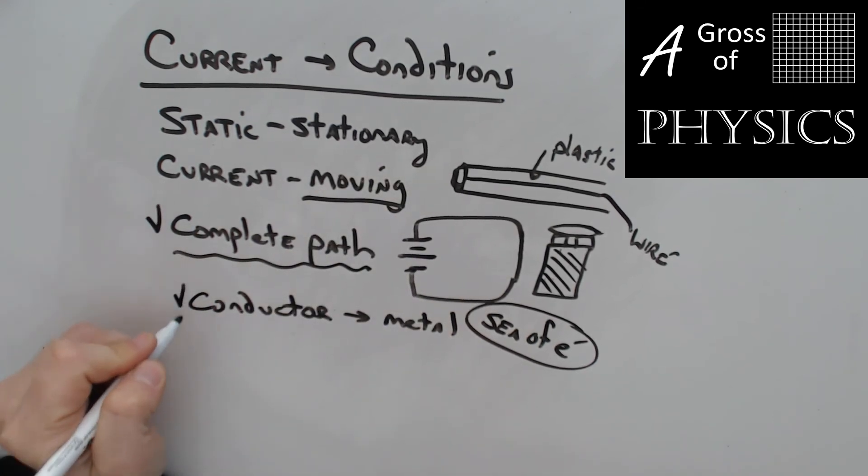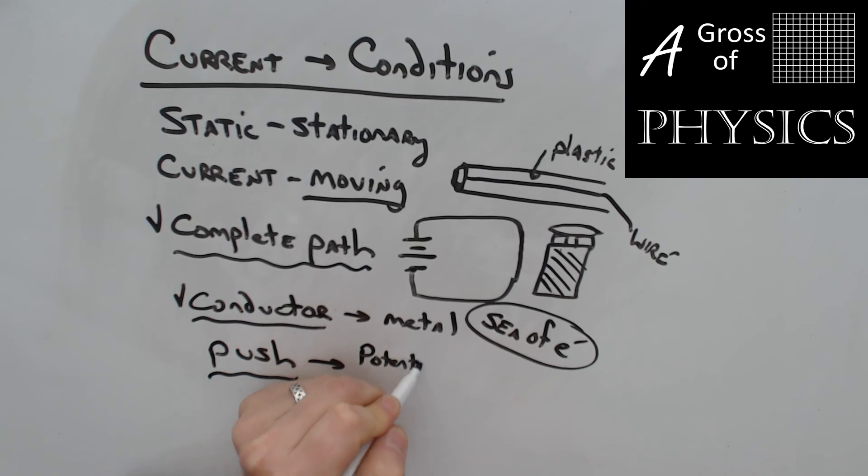So you need a complete path, you need a conductor, and then finally the electrons need a reason to move. And I call that a push. And usually the push is going to be supplied by a potential difference.